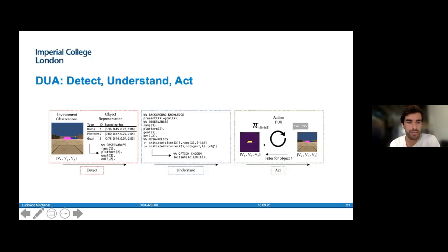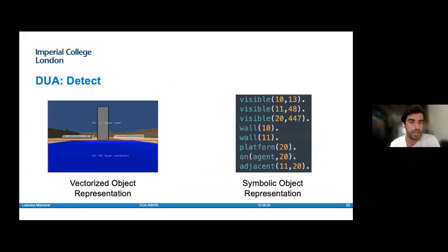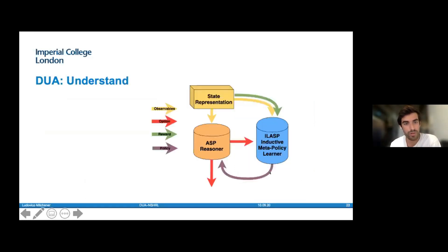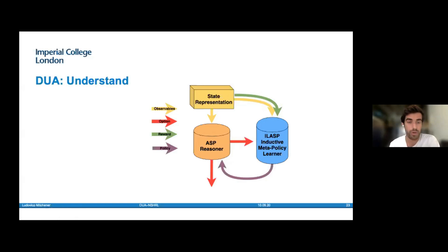Taking a deeper look at each component: the Detect module gets bounding boxes and creates a symbolic object representation out of them. The Understand module takes the state representation, passes it through the ASP reasoner, and outputs an option. Optionally, there is an ILASP inductive meta policy learner which stores all the traces of states going in, options coming out, and the reward fed by the environment, and ultimately decides what the optimal meta policy is using inductive logic programming.